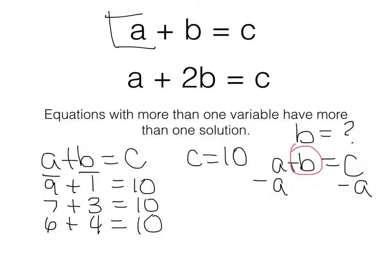Now I'm left with b on the left hand side, and that's going to equal c minus a. So what this allows me to do is anytime I know c and I know a, I can calculate b.